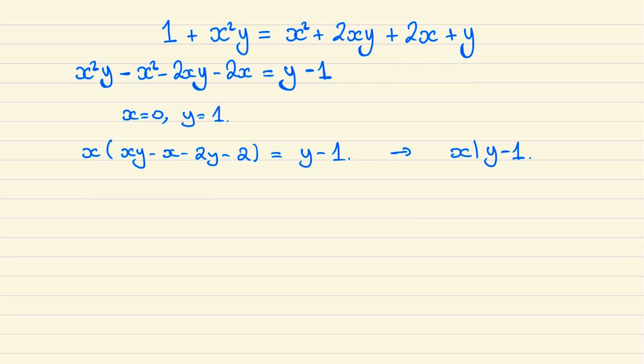We can continue factorizing the left side further by writing this as x times x minus 2 times y minus 1 and then all take away 4.